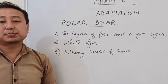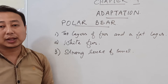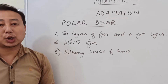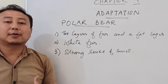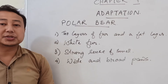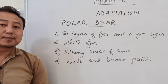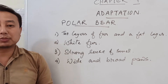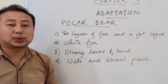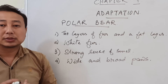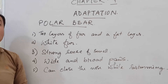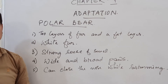The next adaptation found in the polar bear is a strong sense of smell. This strong sense of smell helps the polar bear detect its prey even from a very far distance, allowing it to hunt prey easily. The next adaptation is the broad, white paws. The broad paws help reduce the pressure of the polar bear's body on the ice and snow, allowing it to walk on the snow very easily without sinking.